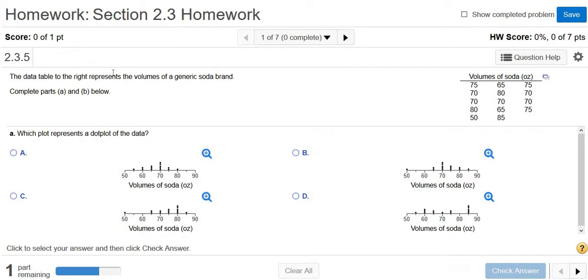The data table to the right represents the volumes of a generic soda brand. Complete parts A and B below. Which plot represents a dot plot of the data?